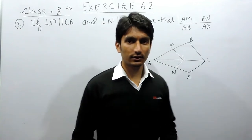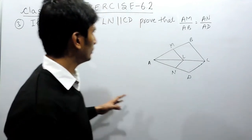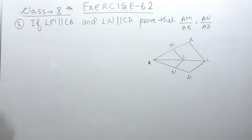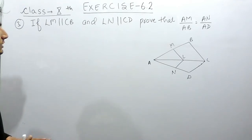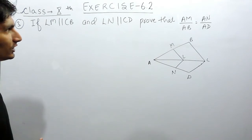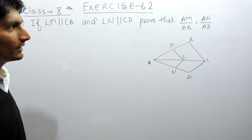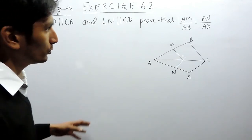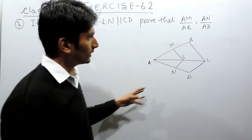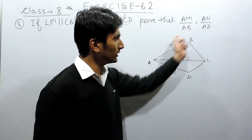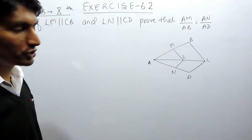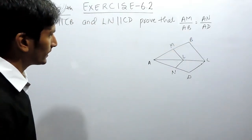Hello everyone. In this video we are going to solve question number 3 of exercise 6.2. The question says: if LM is parallel to CB and LN is parallel to CD, you have to prove that AM upon AB is equal to AN upon AD. To prove this expression we have to use the Basic Proportionality Theorem.